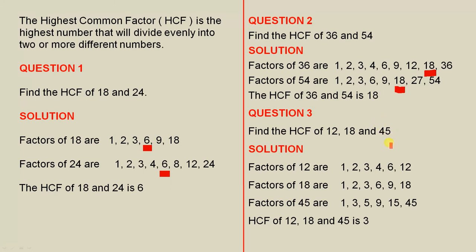Now we're finding the highest common factor of 3 numbers. Remember, the HCF is the highest number that will divide evenly into 2 or more. So here we have 3 numbers. The factors of 12 are these ones. The factors of 18 are those numbers. And the factors of 45 are those numbers.